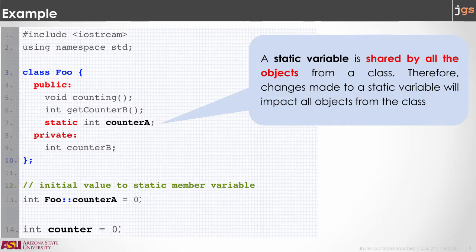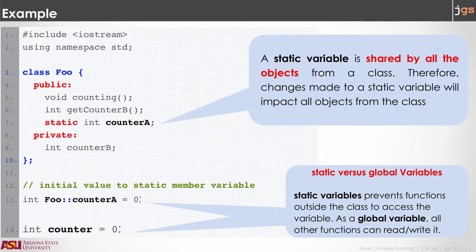We can use the keyword static to create a static variable. Static variables are going to be shared by all the objects from a class, just like in Java. An important difference is that static variables in C++ must be explicitly defined outside of the class. So in order to define a static variable counter inside of the class, you create the variable inside the class and also define it outside. Counter is a global variable because it's outside of the class, outside of any method, and does not have the scope resolution operator.